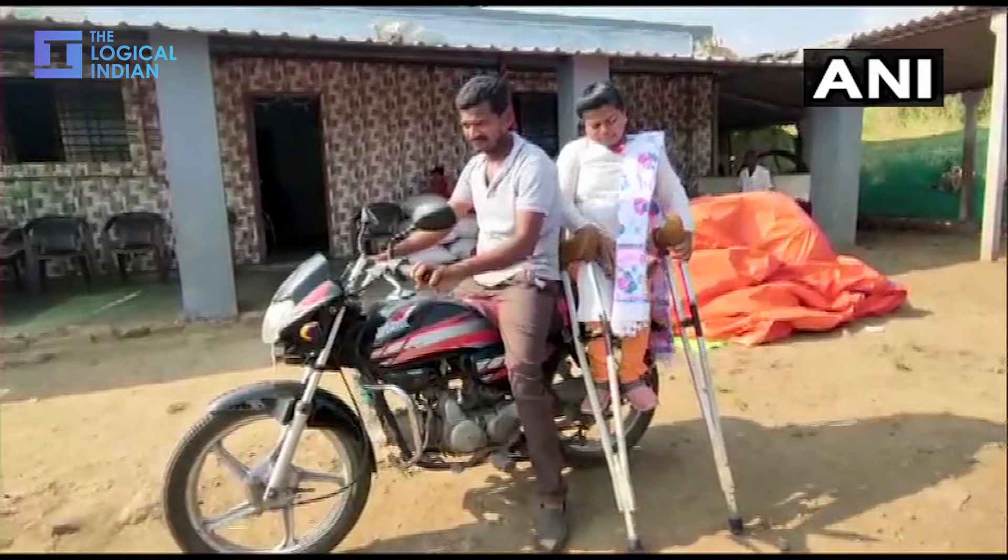A 34-year-old specially-abled woman has become the sarpanch of two villages. She helps ensure good drinking water, roads and houses for the poor. Kavita Bhondwe has not let her disability come in the way of serving the people of two villages in Dendori Taluka in Nashik district.